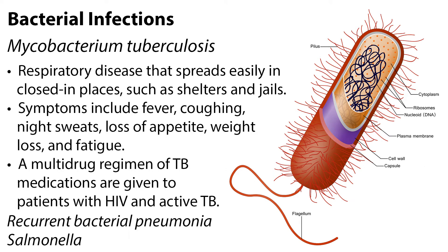Mycobacterium tuberculosis is another common bacterial infection. This respiratory disease spreads easily in closed-in places, such as shelters and jails. Symptoms include fever, coughing, night sweats, loss of appetite, weight loss, and fatigue. A multidrug regimen of TB medications is given to patients with HIV and active TB. Other common bacterial infections include recurrent bacterial pneumonia and salmonella.